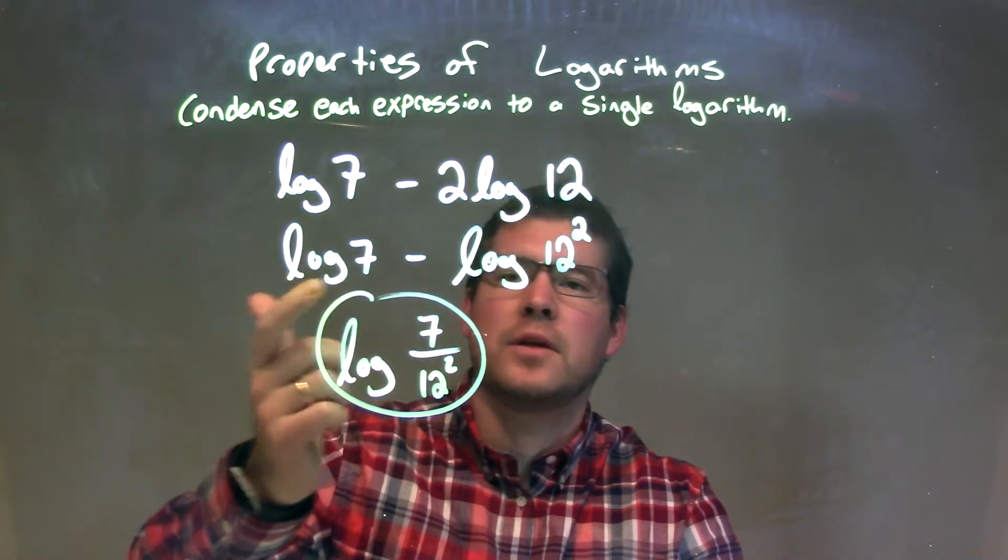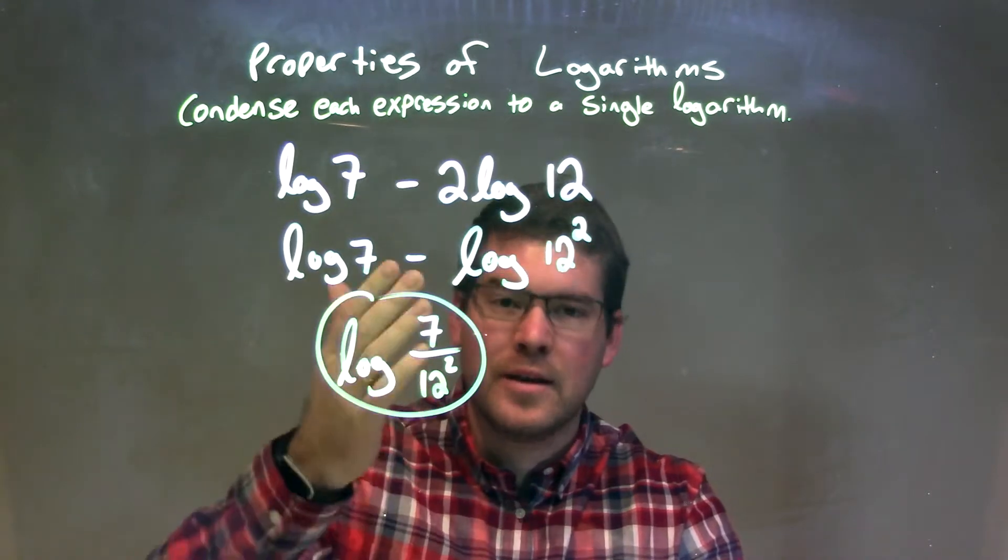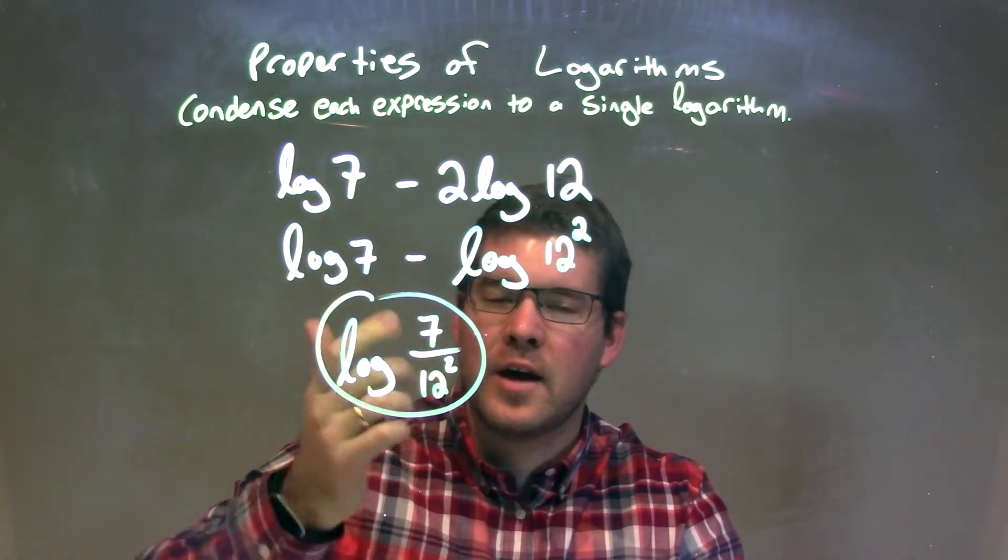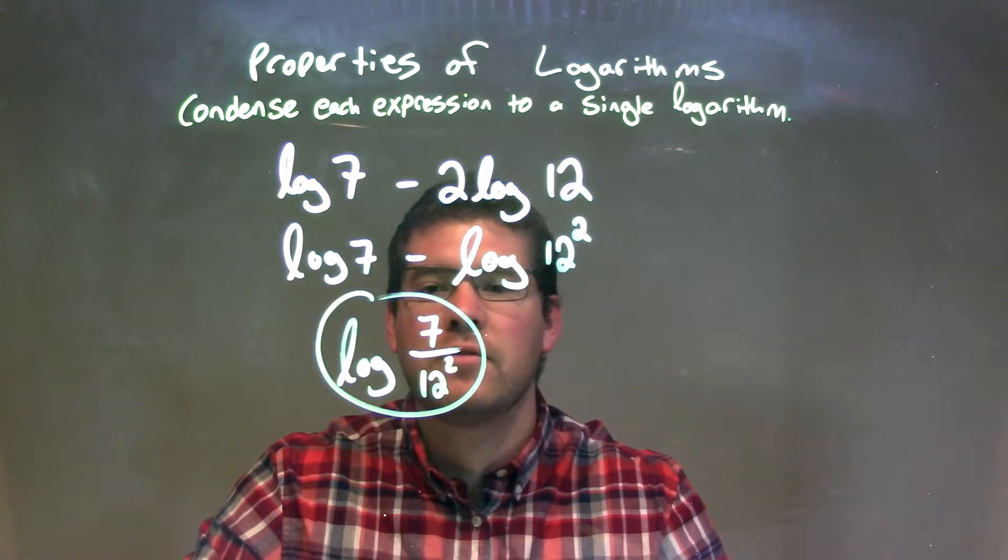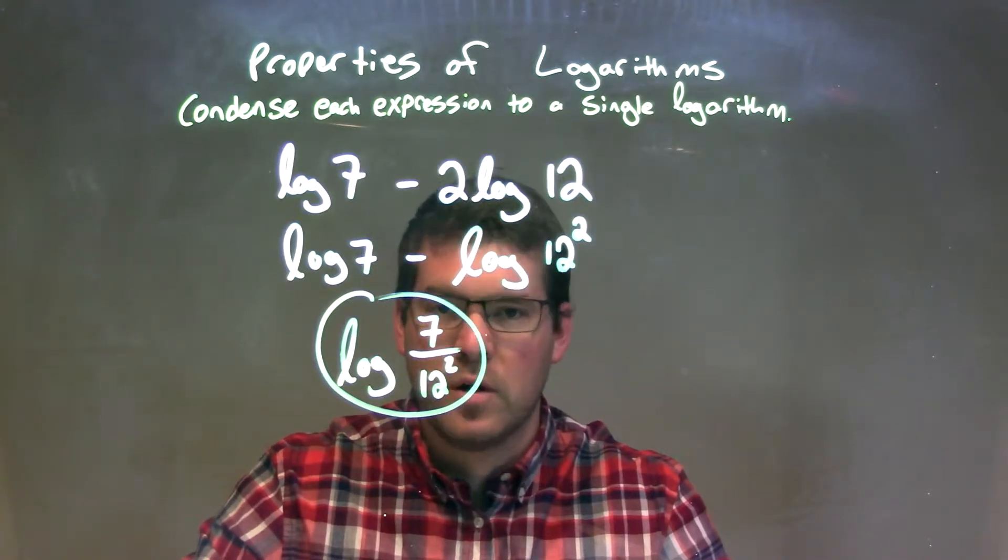Now, we have subtraction separating two logs, so that can condense to be division of the numbers inside one big log. That gives us our final answer of log of 7 divided by 12 squared.